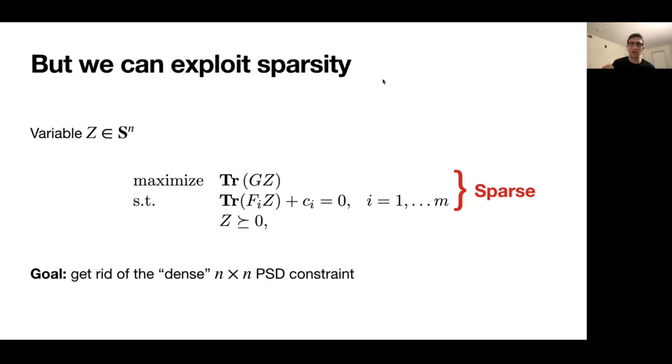We just care that it matches Z on the 2% of entries we care about and the other 98% or whatever they need to be to make the matrix positive semi-definite. In other words, we need some type of tool that gives us a check that a sparse matrix can be completed to be a positive semi-definite matrix. And for this, we're going to turn to some things or some tools from graph theory.